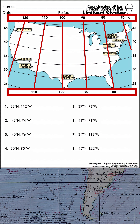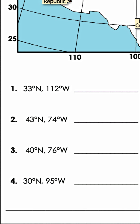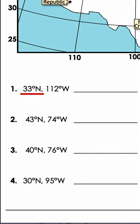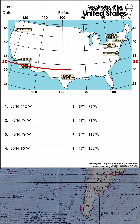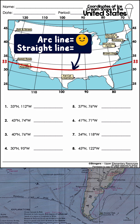Now let's put that information to use. For the first coordinates, you'll focus on locating 33 degrees north. That should be located about here, so our location could be located anywhere along this line of latitude. Notice the lines of latitude follow an arc, not a straight line.